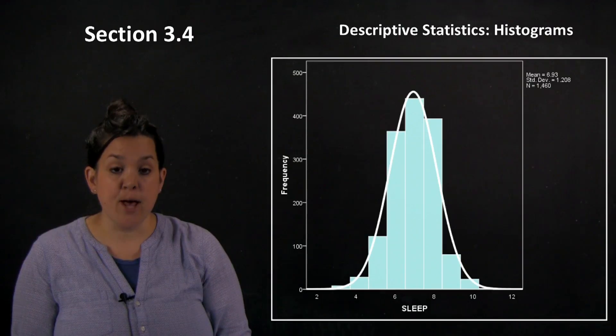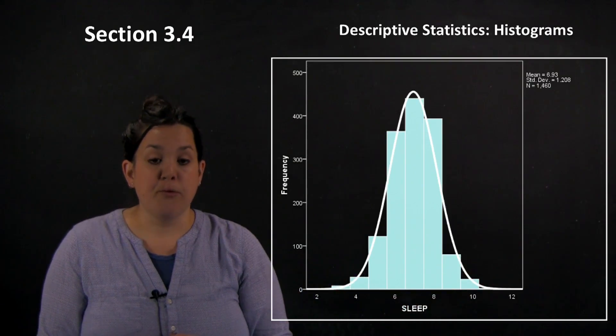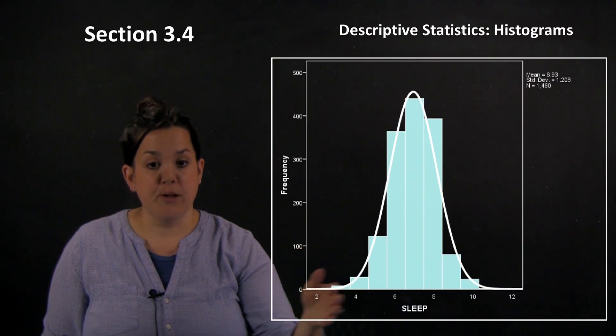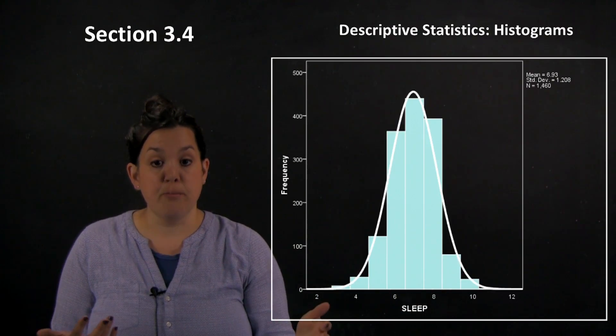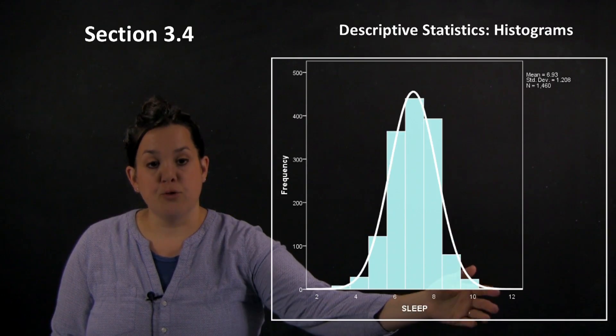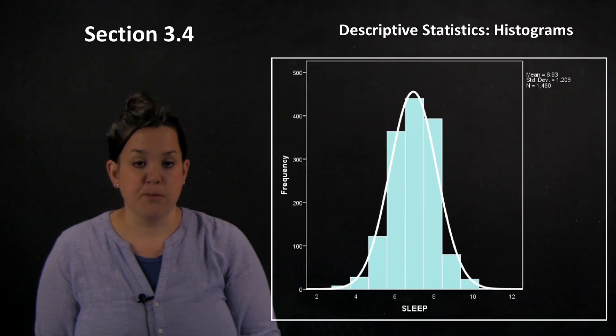The next thing we have is variability or spread. Remember from a few lectures ago, the variability or spread could be range. Here it appears that our data is ranging from about three hours of sleep a night to about 10 or 11 hours of sleep a night.